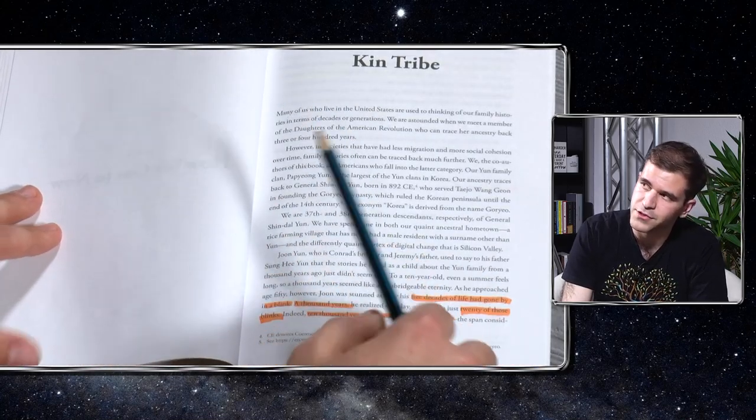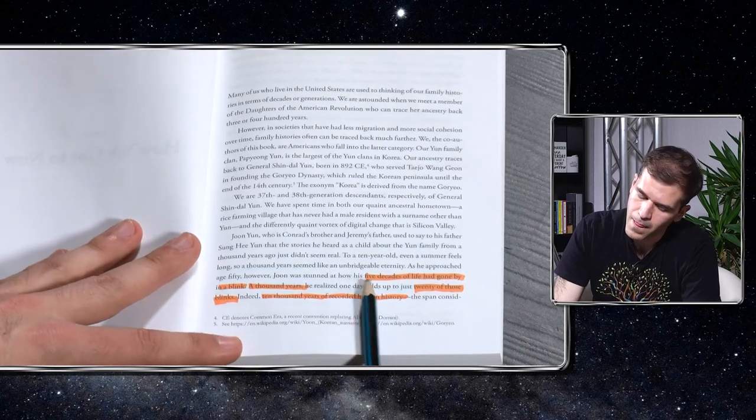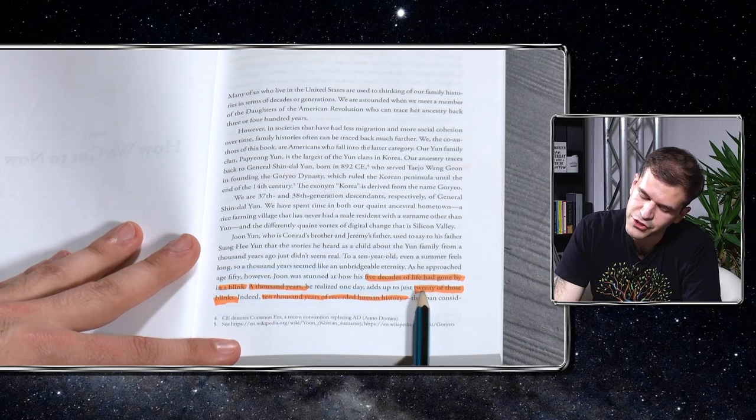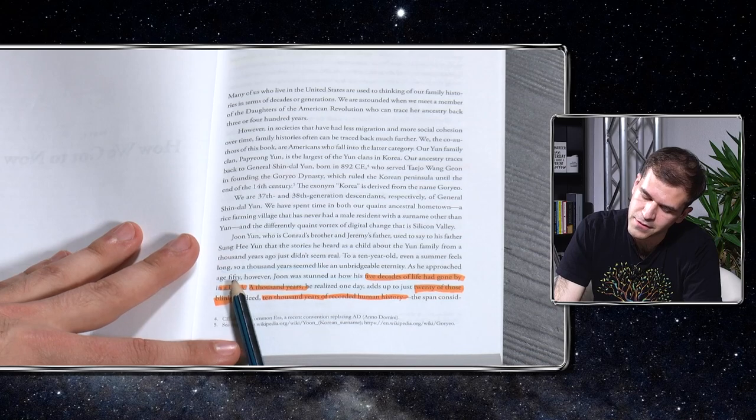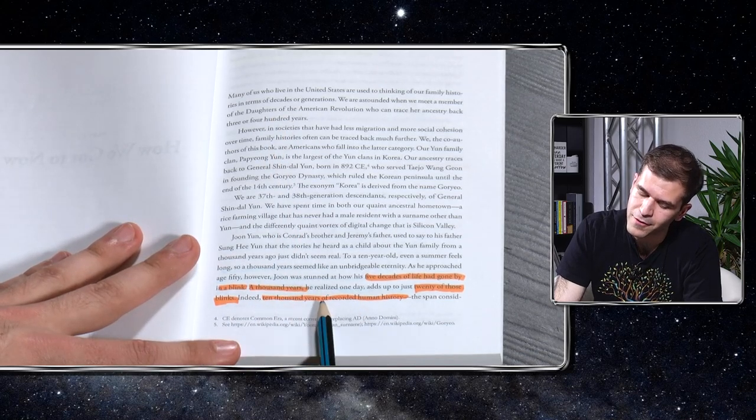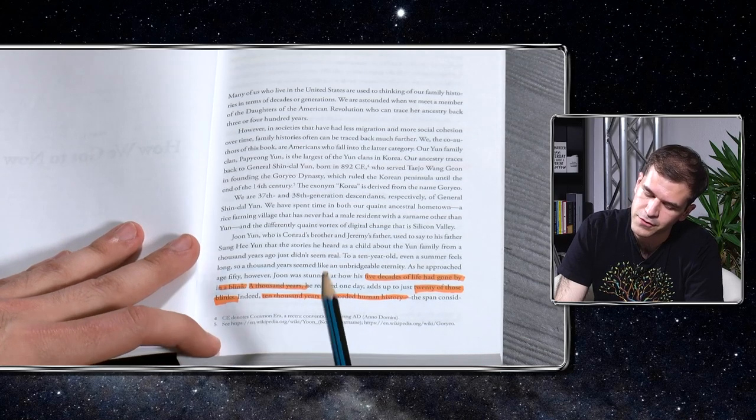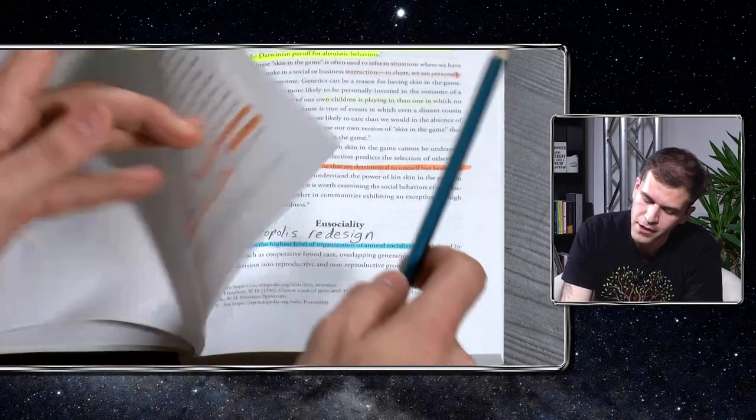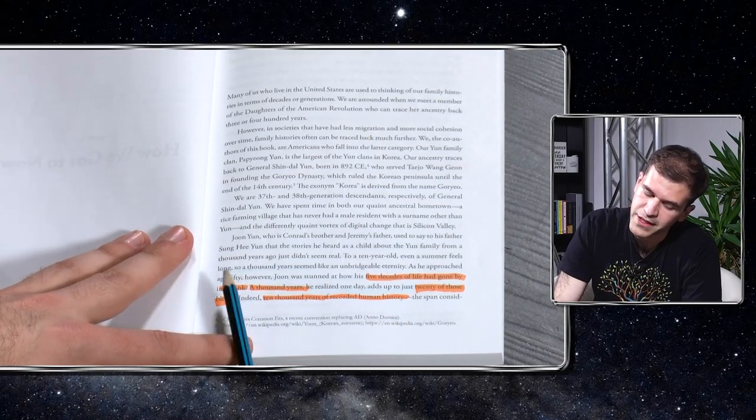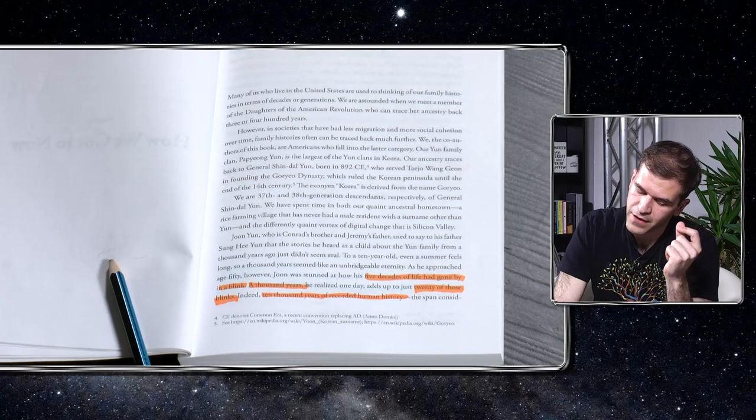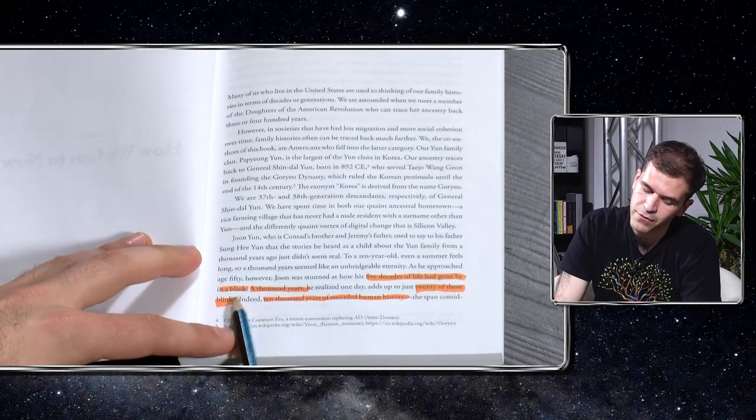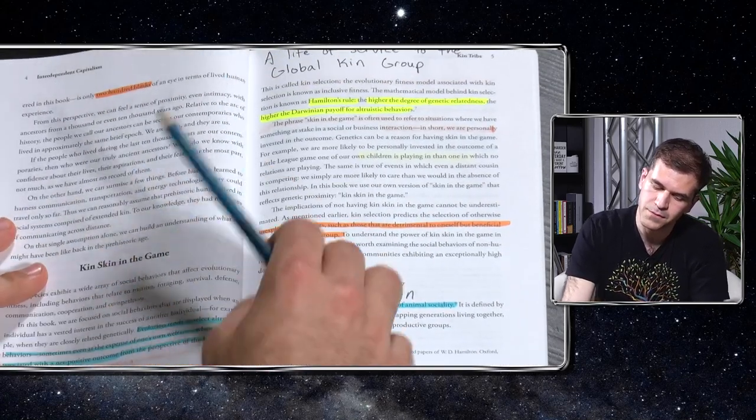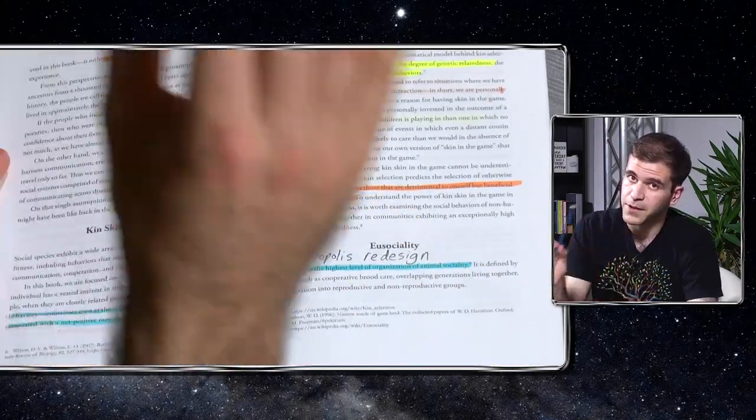How we got to now. Kin tribe. Five decades of life had gone by in a blink. A thousand years adds up to just 20 of those 50-year blinks. One blink is 50 years. Time goes by so fast. 10,000 years of recorded human history is 20 of those blinks. The span considered in this book is 200 blinks of an eye. One blink is 50 years. Life goes by that fast. Five decades of life. A thousand years is 20 of those blinks. And 10,000 years of recorded history is 200 blinks. It's very important. Time goes by so fast.